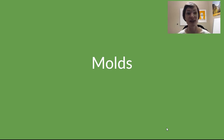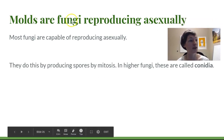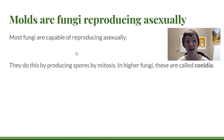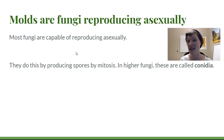Let's look at molds as our last group of microfungi. Molds are fungi reproducing asexually. Most fungi are capable of reproducing asexually, and whenever they're doing that — no matter what group they're in — we call that a mold. Some fungi can do both asexual and sexual reproduction; some we've only seen the asexual stage or only the sexual stage.